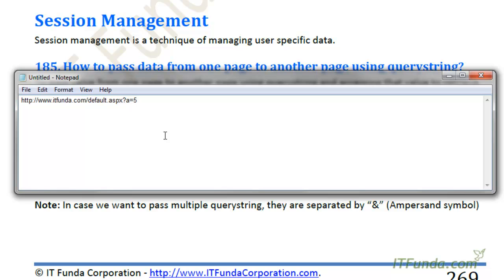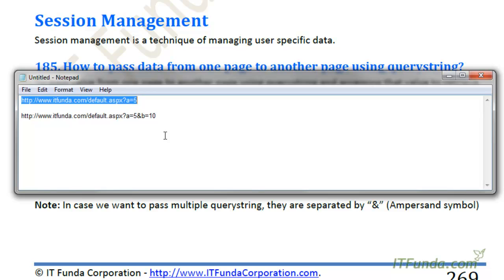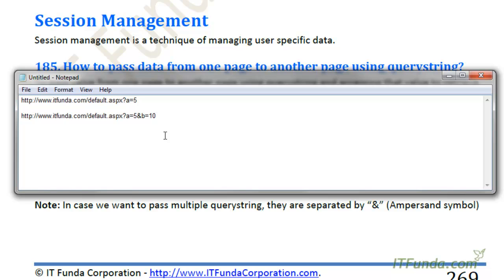If we have to add another query string, we write ampersand, then b equal to 10. So in the first case, default.aspx gets query string 'a' whose value is 5. In the second case, default.aspx gets two query strings: 'a' with value 5 and 'b' with value 10. Remember, the query string starts with a question mark and all following query strings are concatenated using the ampersand symbol.